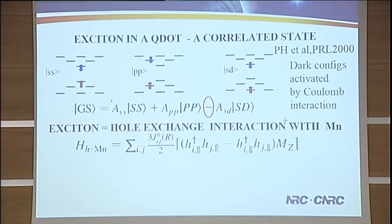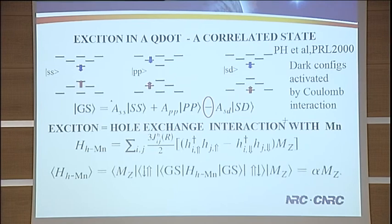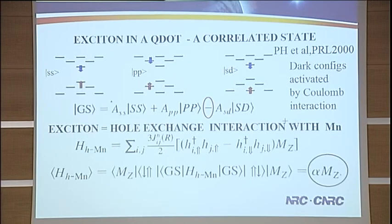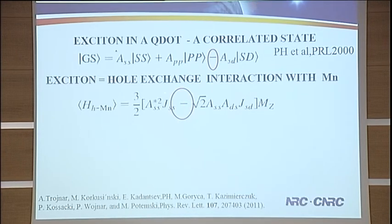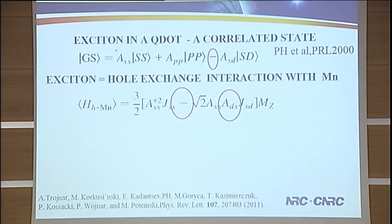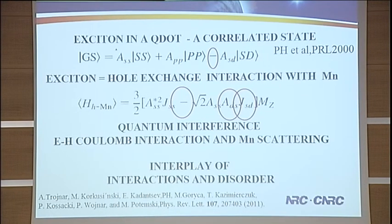We focus on the interaction of an exciton with the magnetic ion. The first thing to calculate is the hole exchange interaction with the magnetic ion using an exchange Hamiltonian with exchange couplings, the hole spin, and the manganese spin — it's only a Jz·Mz interaction. The expectation value is proportional to Mz, the magnetic projection of the magnetic ion, and consists of two terms: a normal interaction of the electron and hole on an S state, and an additional term proportional to the amplitude of the exciton wave function on the dark configuration, which is only possible due to electron-hole interactions and scattering from S to D shells. This is a quantum interference between interactions and manganese-mediated scattering.